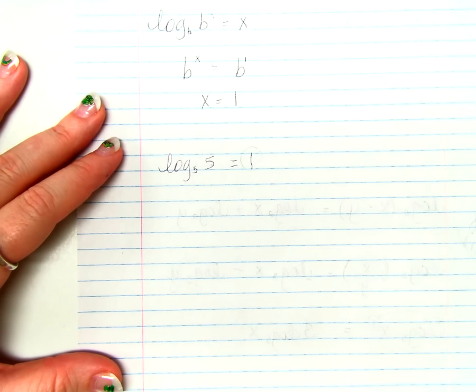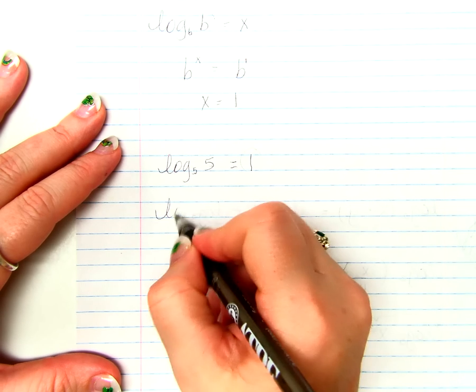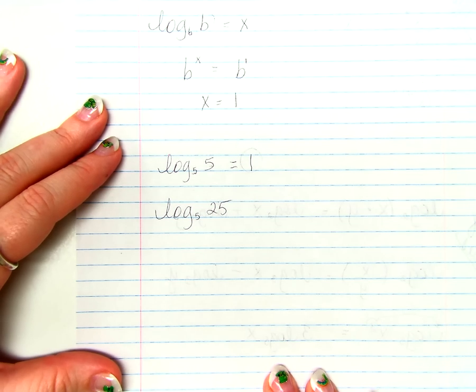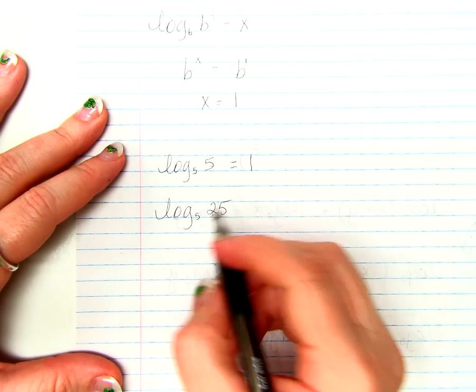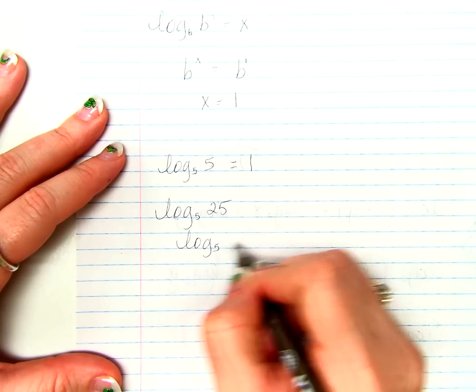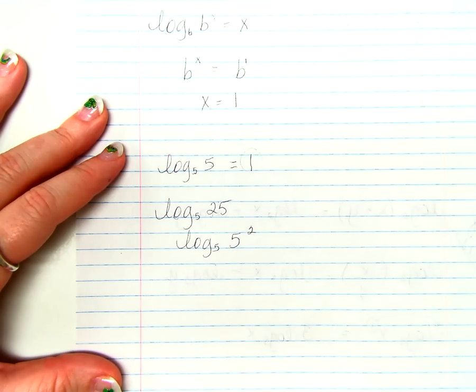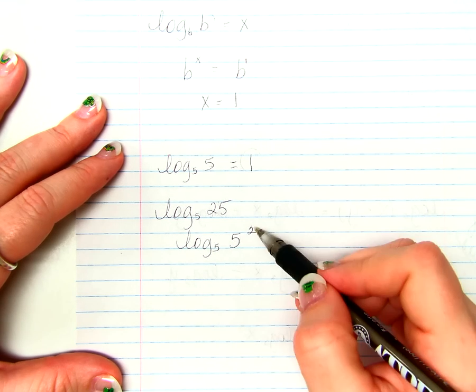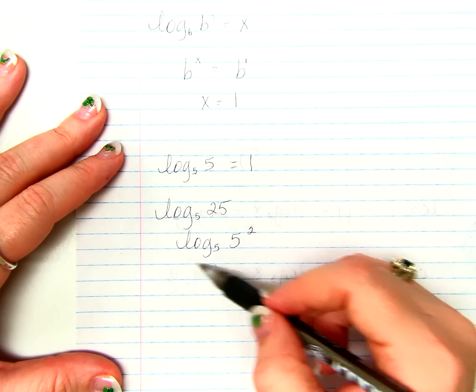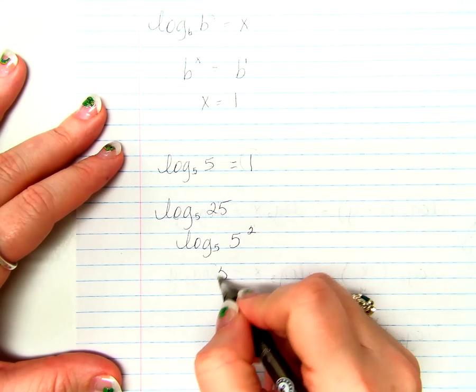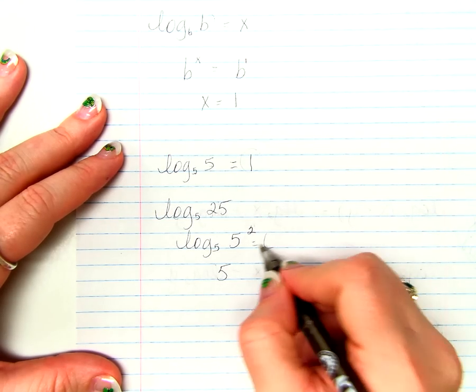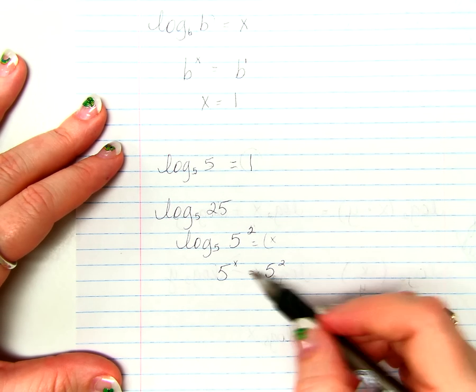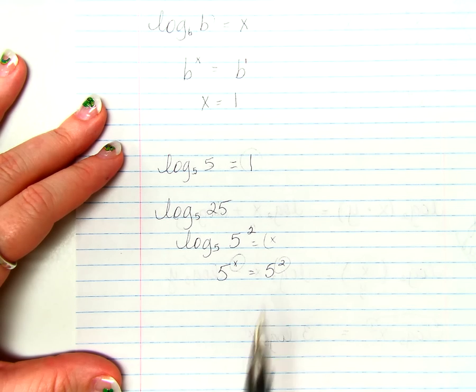Taking it very, very, very shortly one step further, what if I had log base 5 of 25? Can you see that this can be rewritten as log base 5 of 5 squared? Because 25 is 5 squared, correct? What if I rewrote this in exponential form? 5 to some unknown equals 5 squared. What is the unknown? It's 2, right? The exponents have to be equal because the bases are equal.